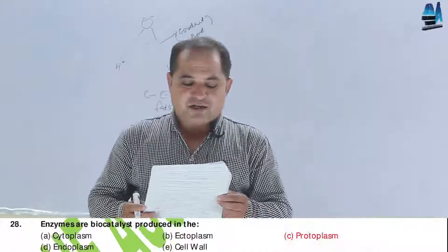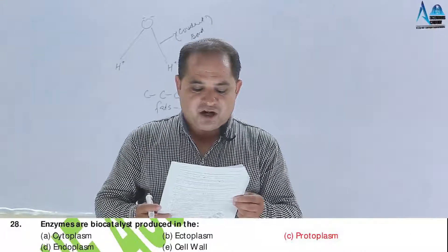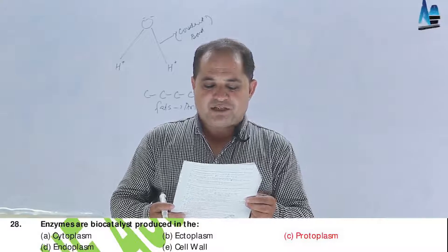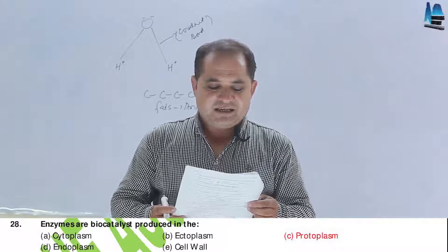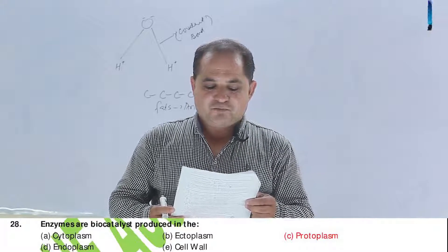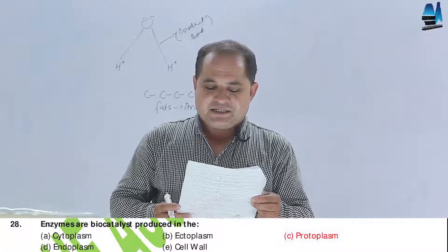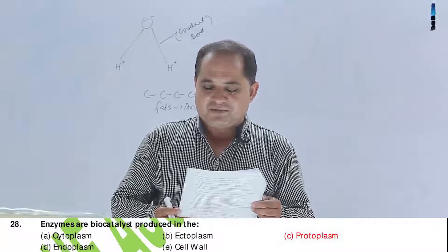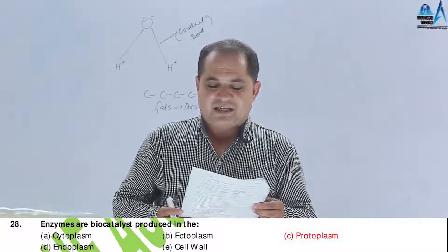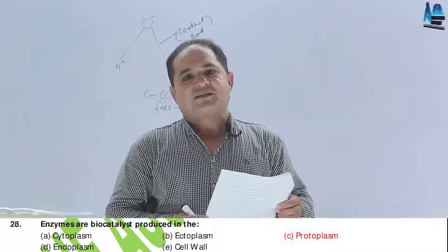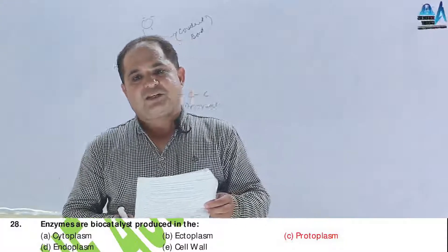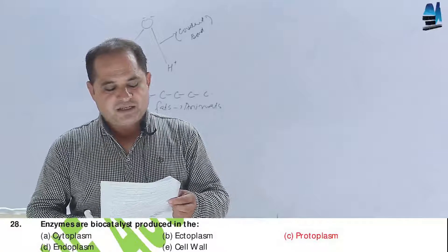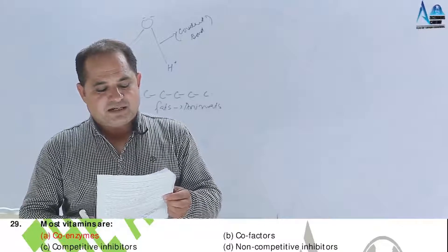Question number 28. Enzymes are biocatalysts produced in: A, cytoplasm; B, ectoplasm; C, protoplasm; D, endoplasm; E, cell wall. All enzymes are produced within the cell in the protoplasm. Answer should be C.